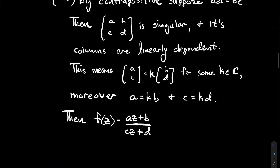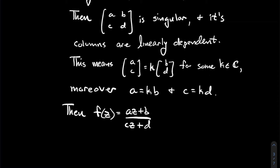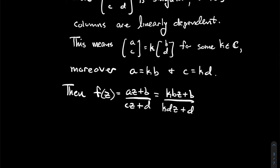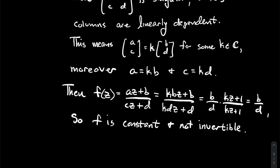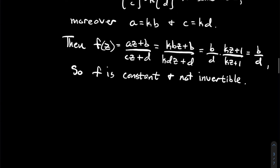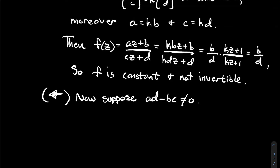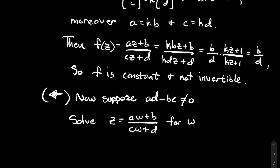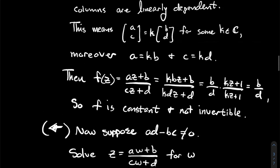Now substitute into the formula: (az + b)/(cz + d) becomes (kbz + b)/(kdz + d). We can factor b from the numerator and d from the denominator, giving (b/d) · (kz + 1)/(kz + 1), which reduces to b/d. So if ad = bc, the LFT is just a constant function — always outputting b/d — and a constant function is non-invertible. That proves the contrapositive.